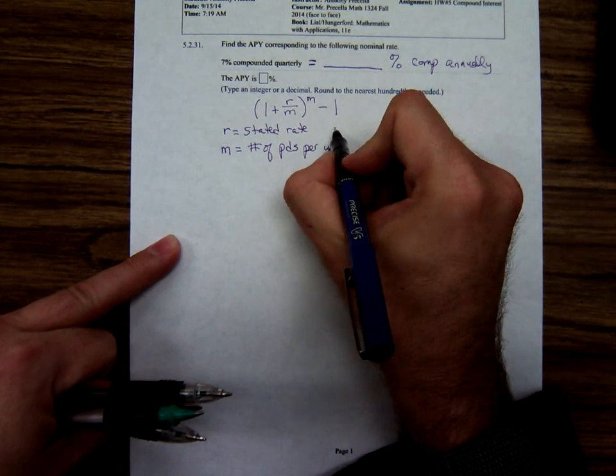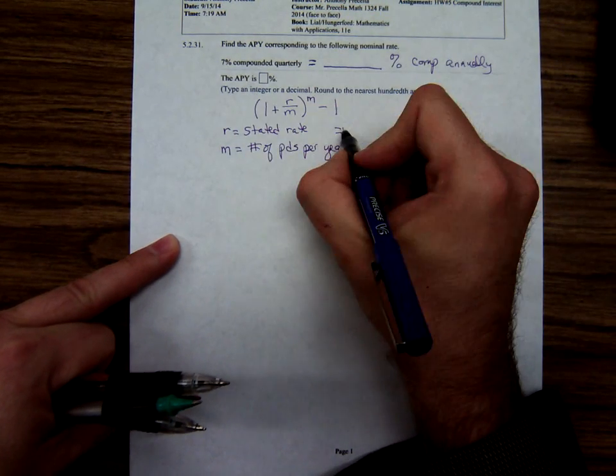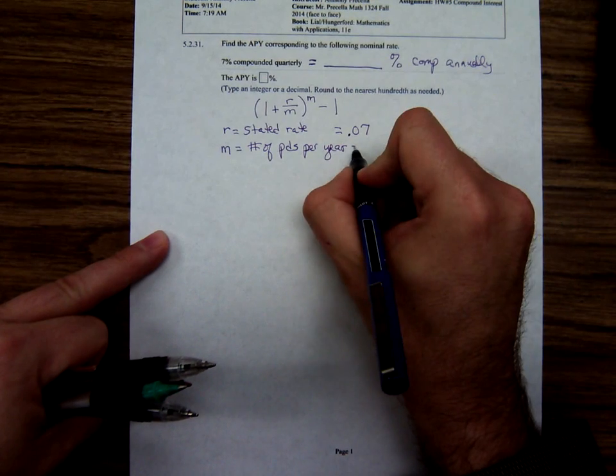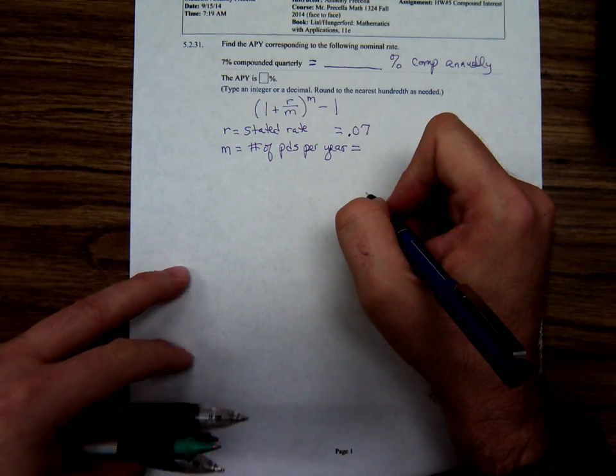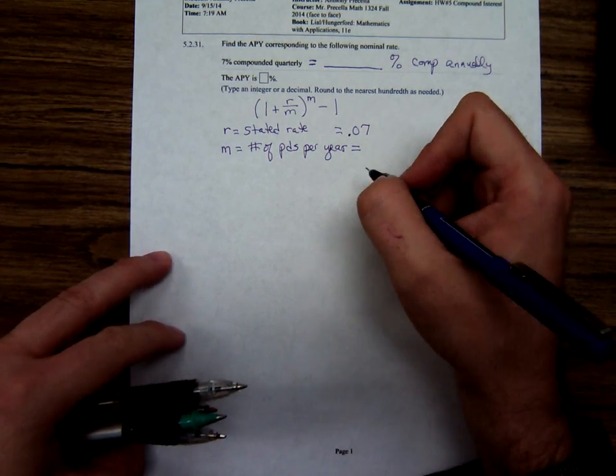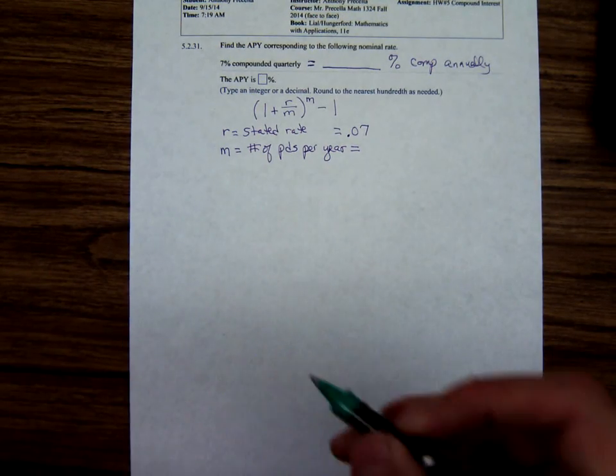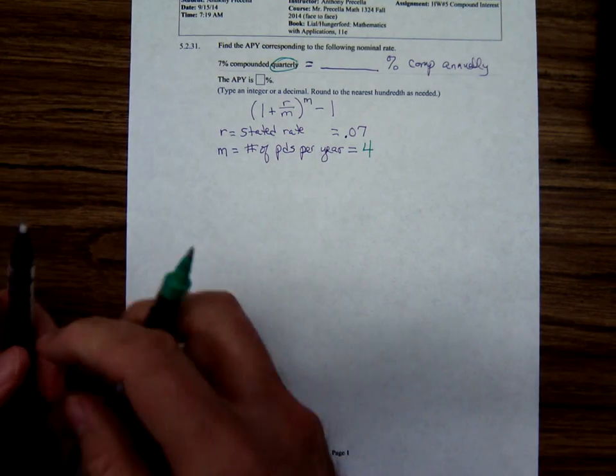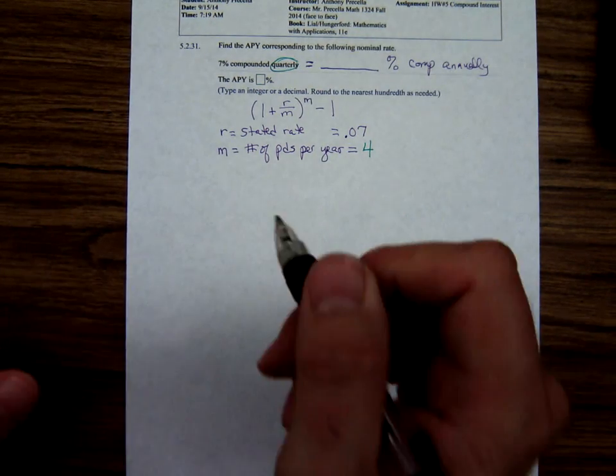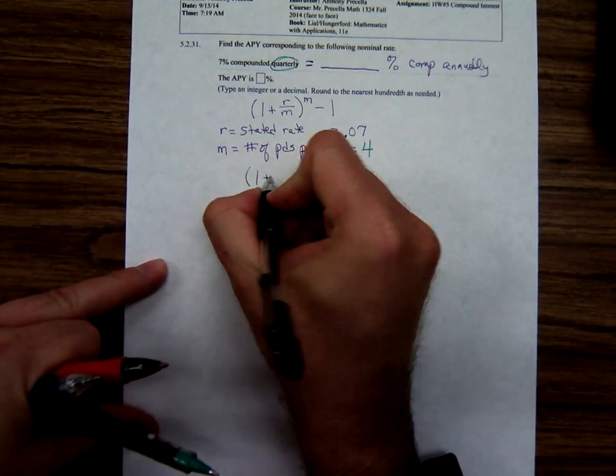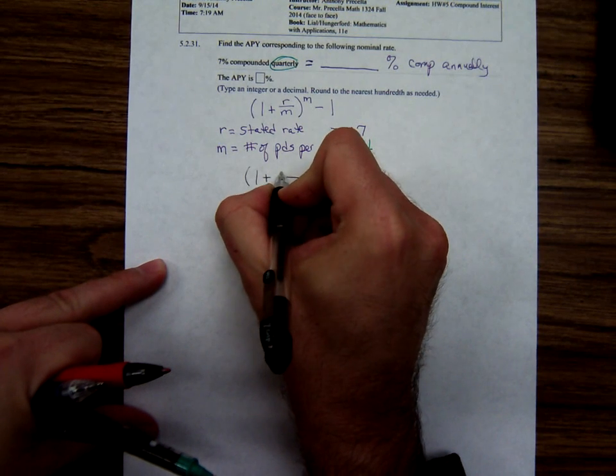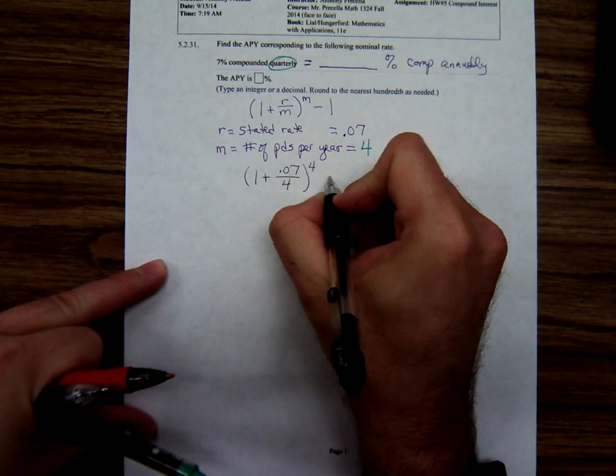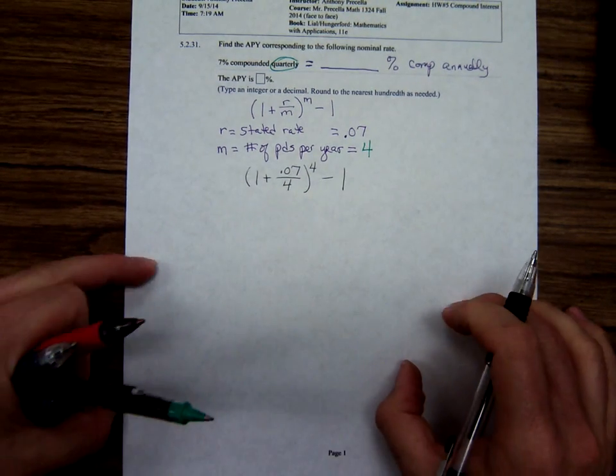So on this problem, the stated rate would be 0.07, that's r. And what about the number of periods per year? Quarterly, how many quarters are there in a year? Four. So plugging in here, we would have 1 plus r over m to the m power minus 1.